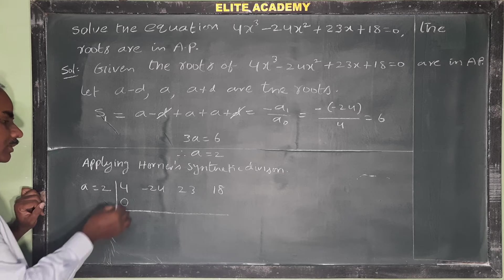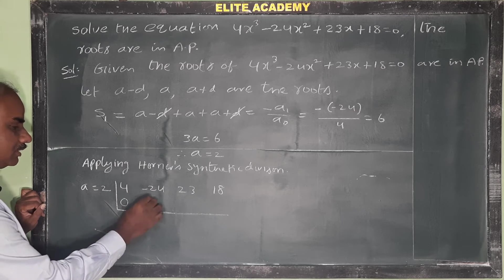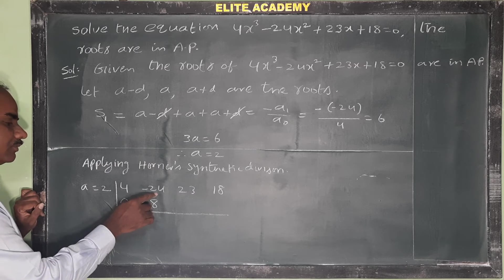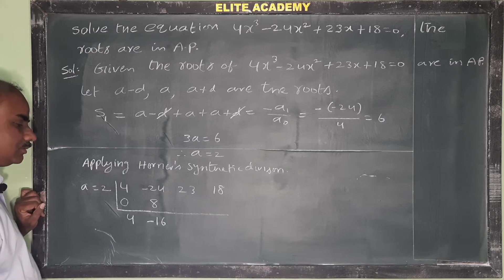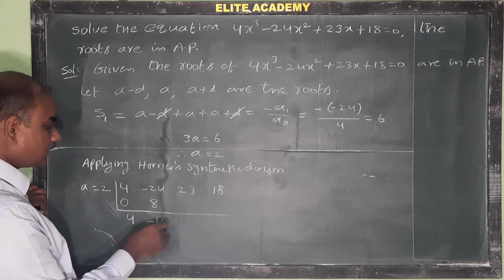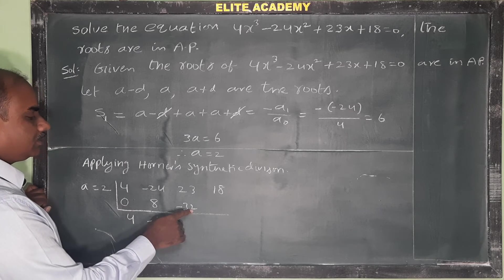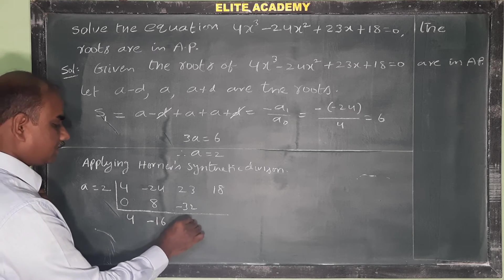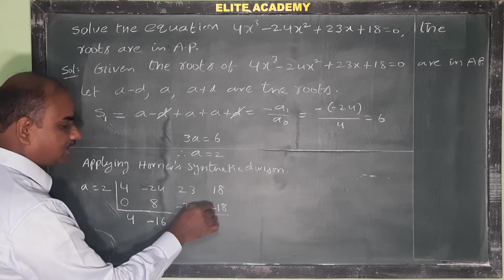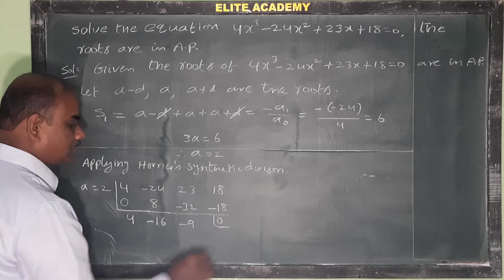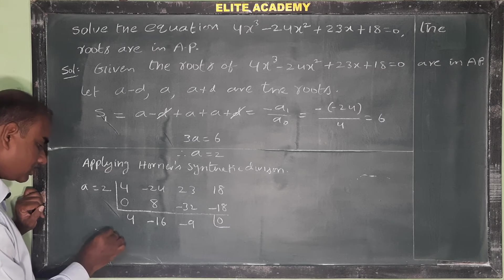Multiply 4 by 2 to get 8; minus 24 plus 8 gives minus 16. Multiply minus 16 by 2 to get minus 32; 23 minus 32 gives minus 9. Multiply minus 9 by 2 to get minus 18; 18 minus 18 gives 0. The remainder is 0, confirming x equals 2 is a root.